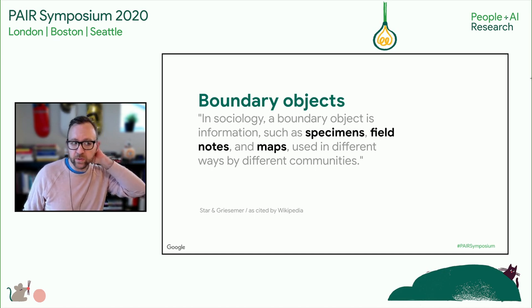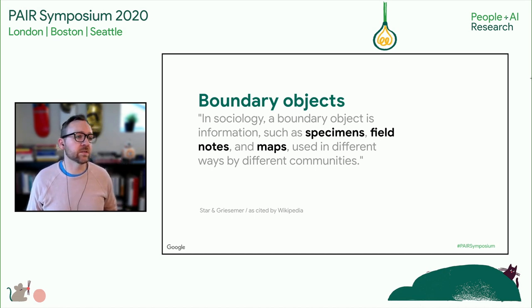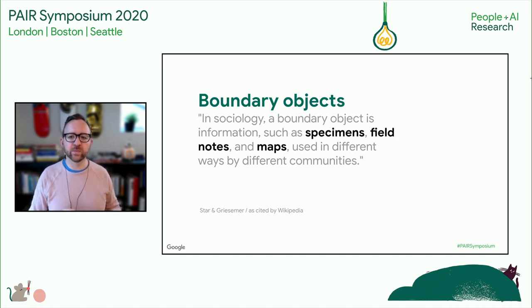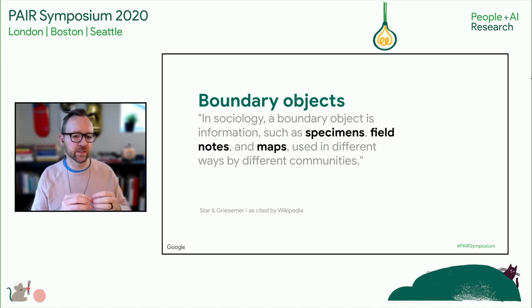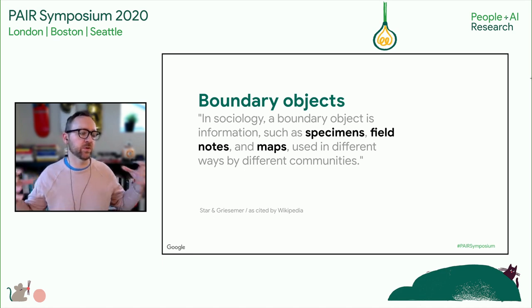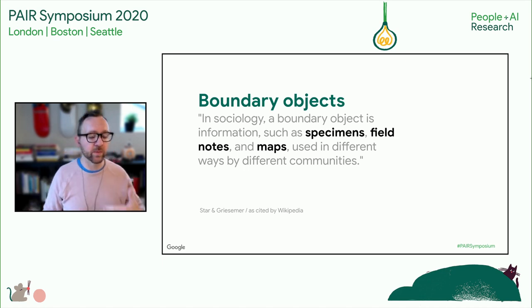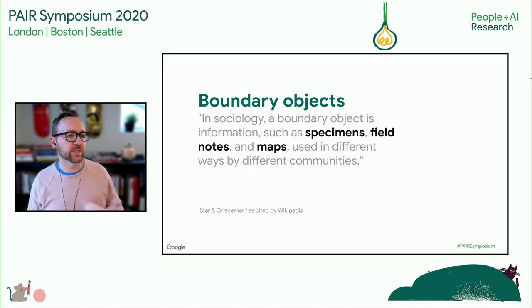One of the things we really focus on is: what are the boundary objects for machine learning? Boundary objects are a concept from sociology, where things like specimens, field notes, or maps are used in different ways by different communities but bring people together. The challenge is: can you create something — an object, a model, an artifact — that allows two groups who couldn't talk to each other effectively before to now do that?